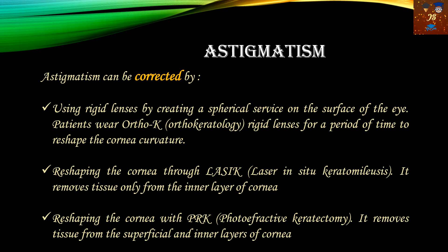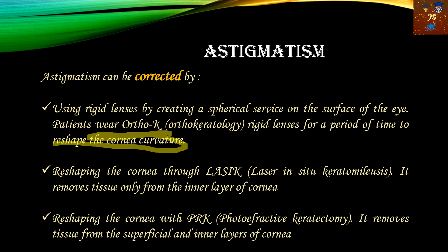To correct astigmatism, patients can use rigid ortho-K lenses for a period of time to reshape the cornea curvature. Alternatively, tissues can be removed from the inner layer of the cornea using LASEK, or from both the superficial and inner layers using photo-refractive keratectomy, PRK. The main aim of astigmatism correction is to reshape the cornea curvature — this is the most important aspect of the treatment.